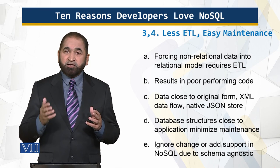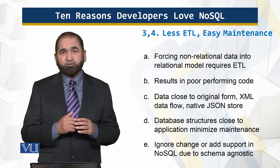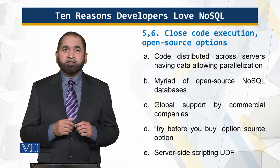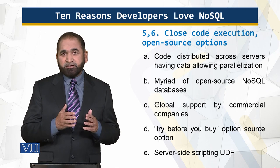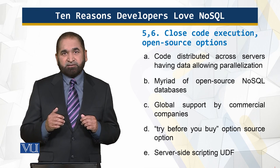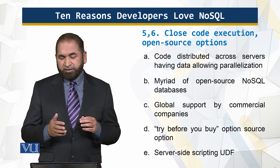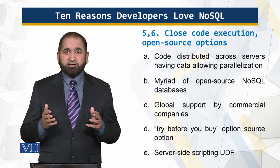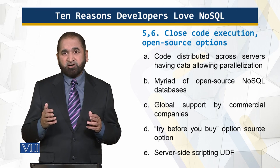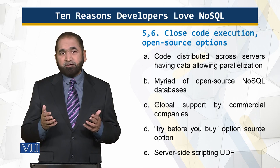Another reason is the ability to ignore or add support for changes. Because of the schema-agnostic feature of NoSQL, it is not dependent upon the schema. There is also close code execution — code is distributed across servers alongside the data, which supports parallelization and results in higher performance. Additionally, there are many different types of NoSQL databases, developed to support different types of problems, and of course there is global support.